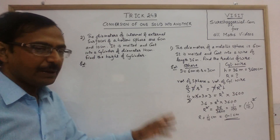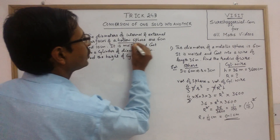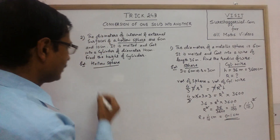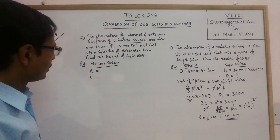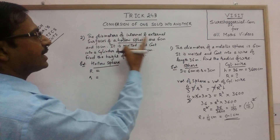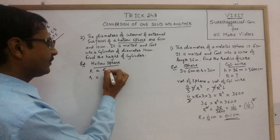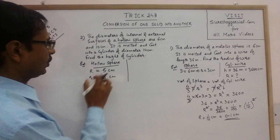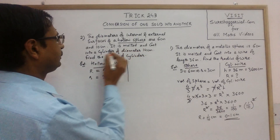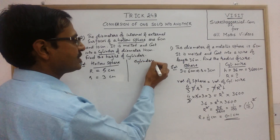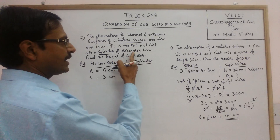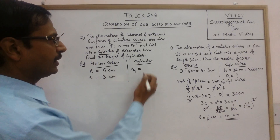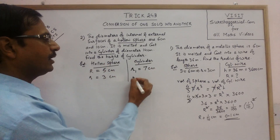Now see another question based on this important concept. Here we have a hollow sphere. A hollow sphere has two radii — internal and external — which I assume as small r and capital R. The diameters are 6 and 10, so the radii are 3 and 5 respectively: external R = 5 and internal r = 3. All dimensions of the hollow sphere are given. It is being converted into a cylinder. The cylinder's diameter is given as 14, so I assume the cylinder's radius as R1 = 7, and we need to find the height of the cylinder.